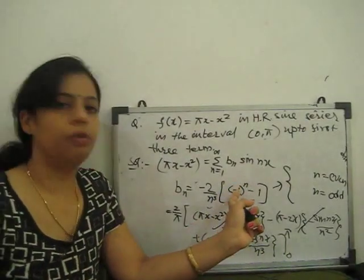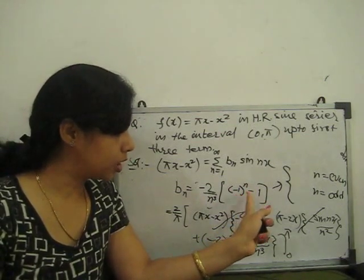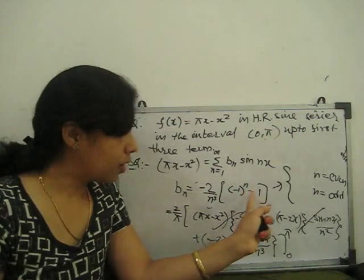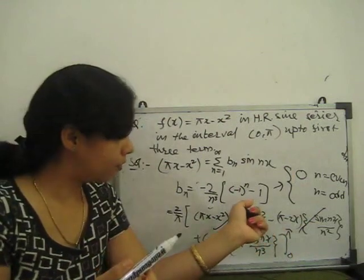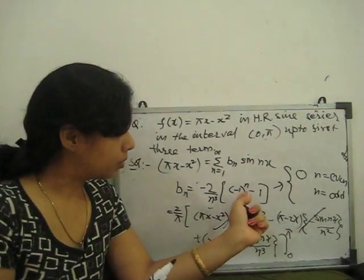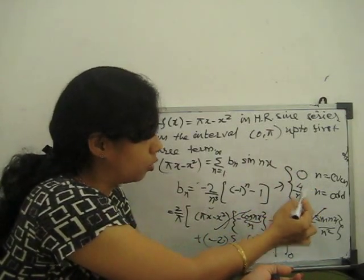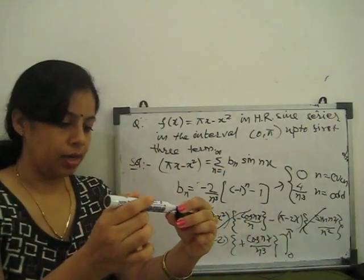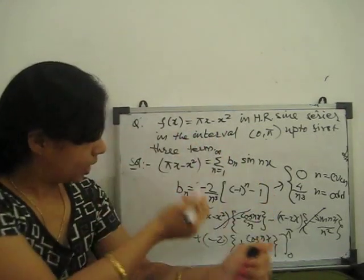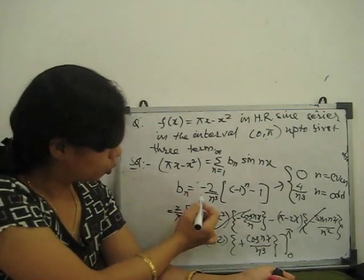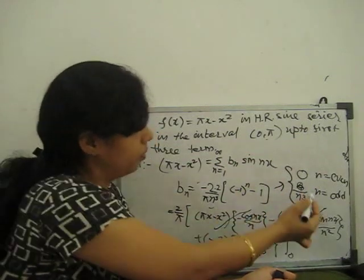Since cos(nπ) = (−1)ⁿ: for n even, cos(nπ) = 1, so bₙ = 0. For n odd, cos(nπ) = −1, so bₙ = −(4/nπ)(−1 − 1) = 8/(n³π). Including the factor of 2, bₙ = 8/(n³π) for odd n, and 0 for even n.